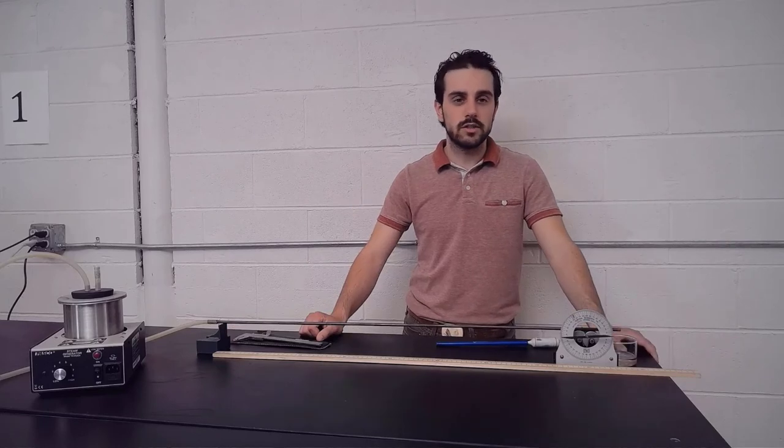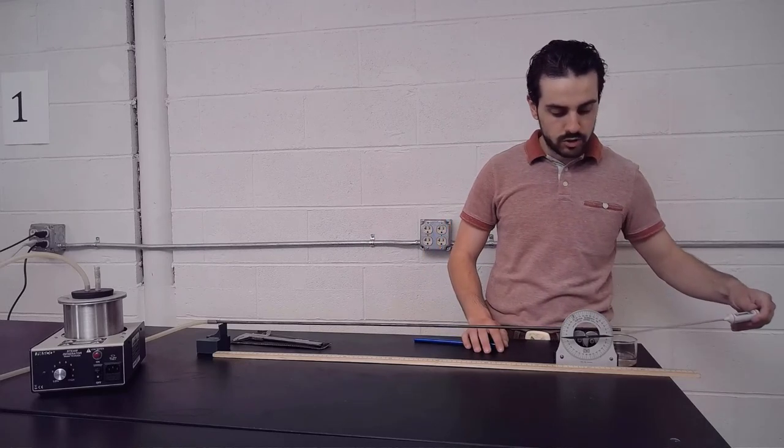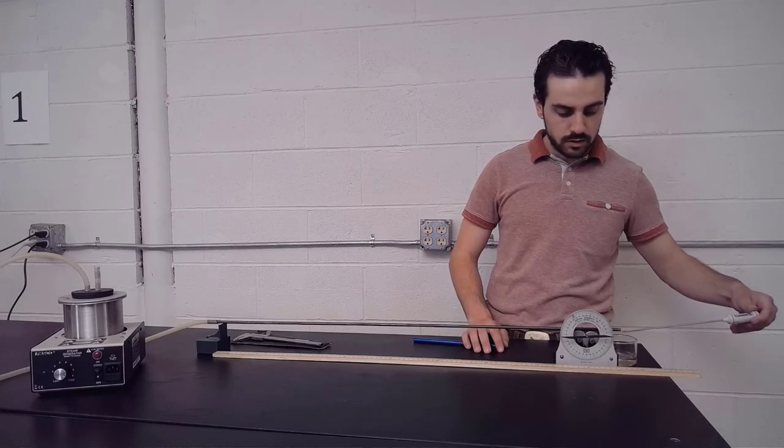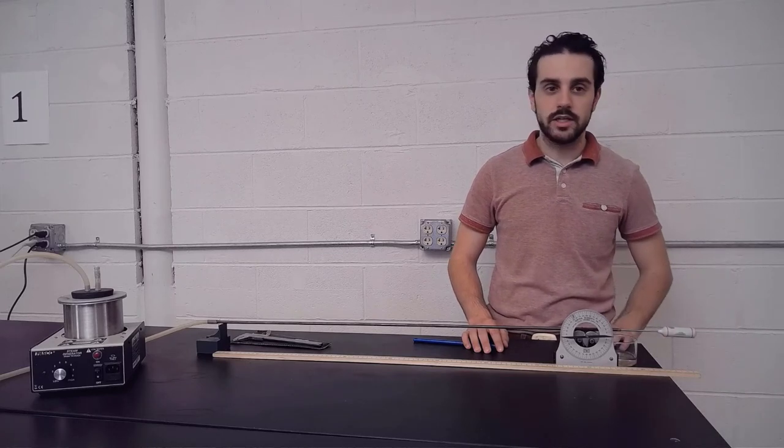For the next part of this experiment, we'll be turning on our steam generator and inserting our thermometer into our metal rod. The thermometer will be touching the rod and will give us a reading of what temperature it is at.